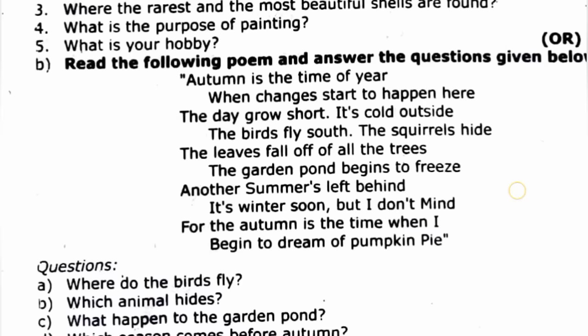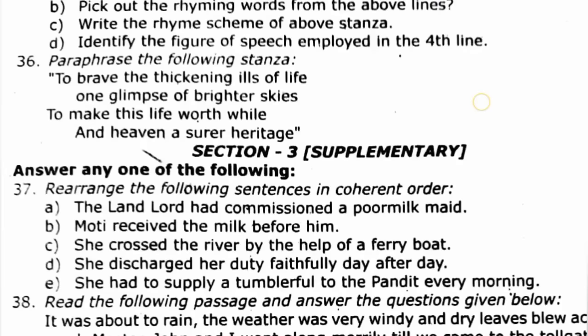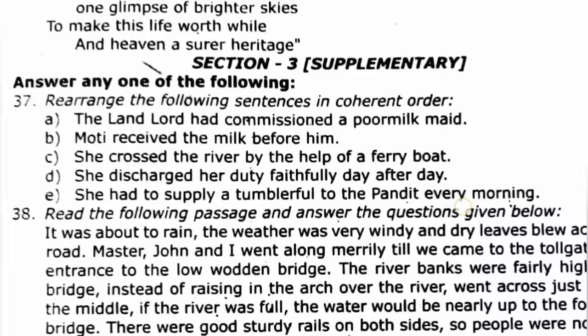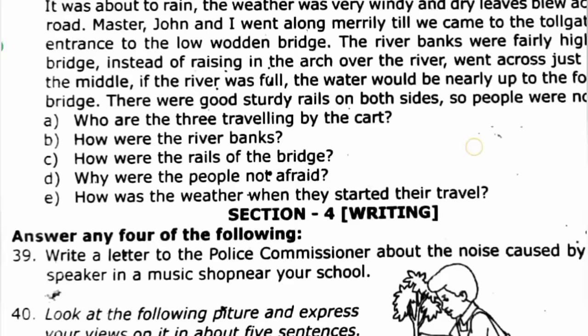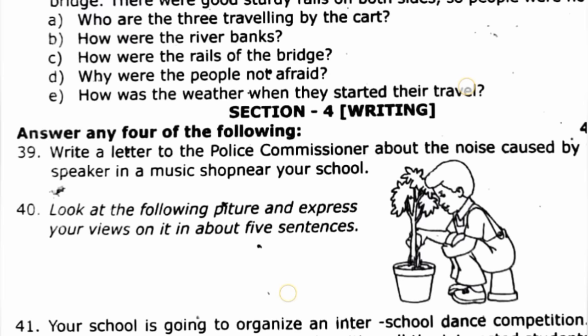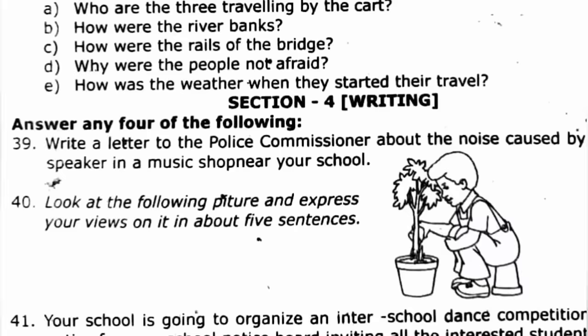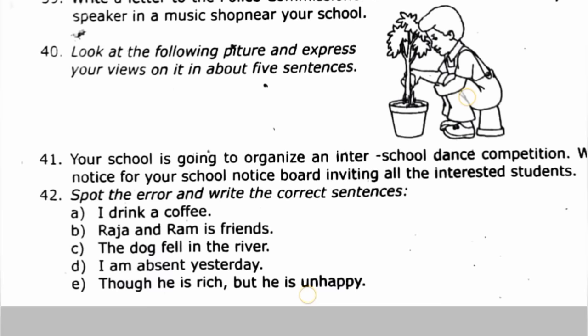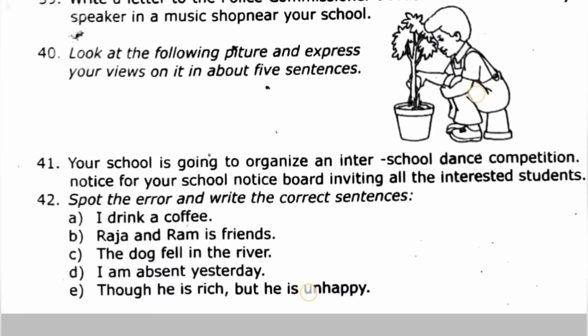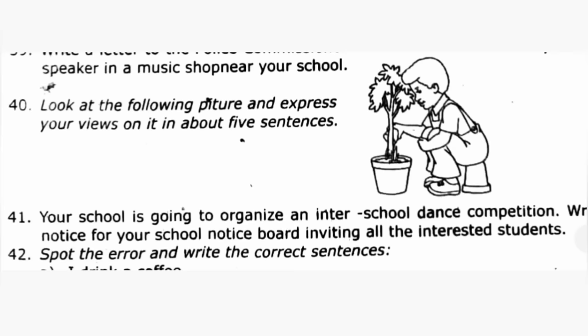Paragraph question answer — we will see. Next, one poem question, question and answer. Any one of the supplementary. Following coherent order: jumbled sentences in correct order. Next, passage question answer — any four. Letter to the police commissioner about the noise of the loudspeaker in the music shop near your school. Picture — one, five sentences, picture composition.